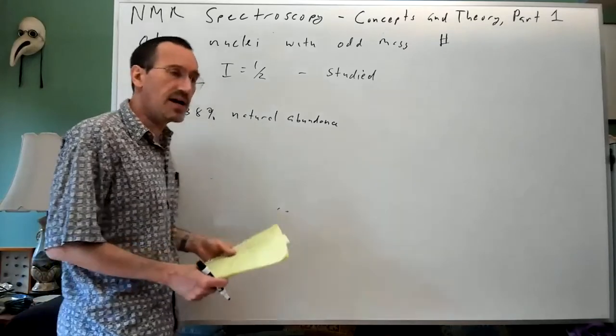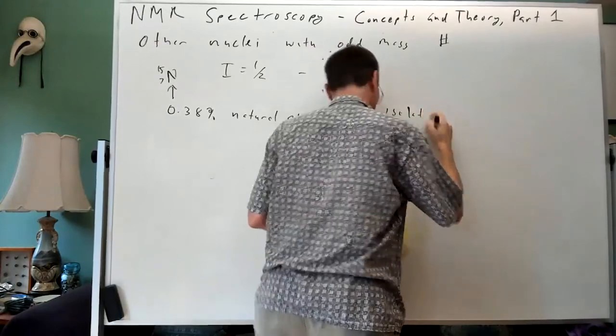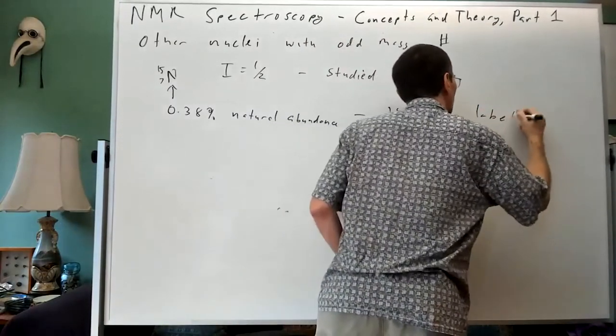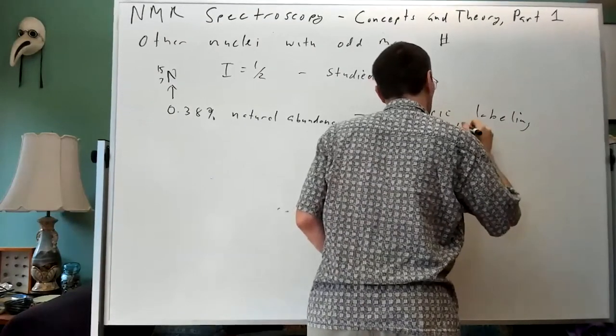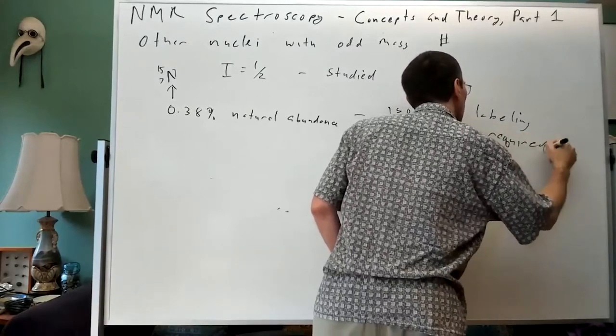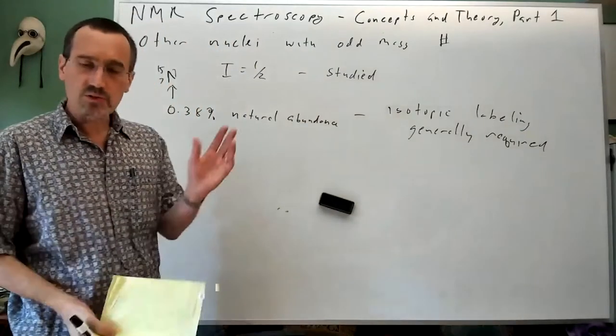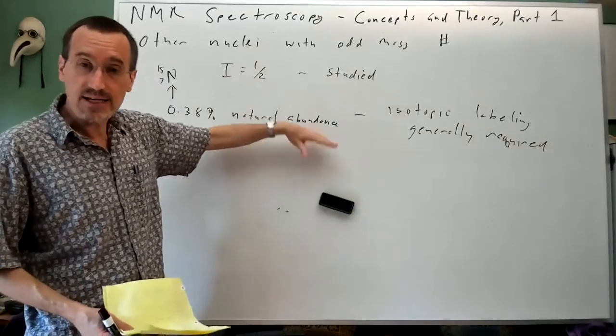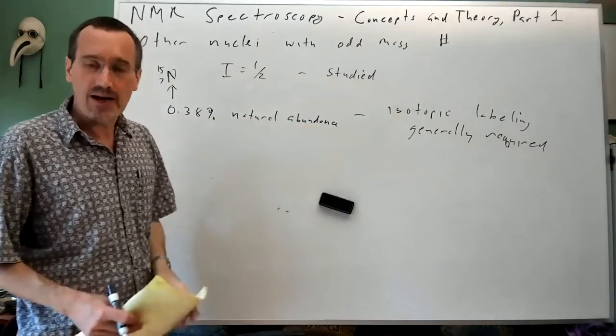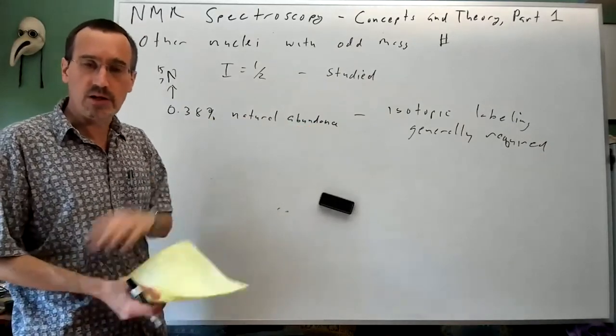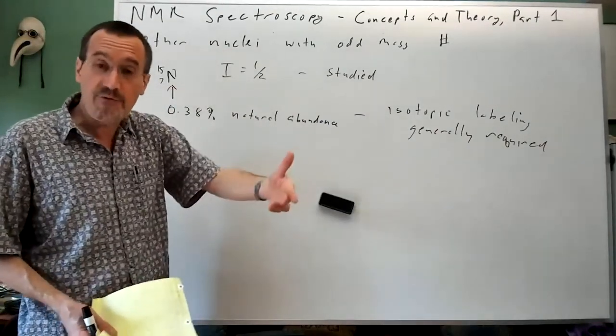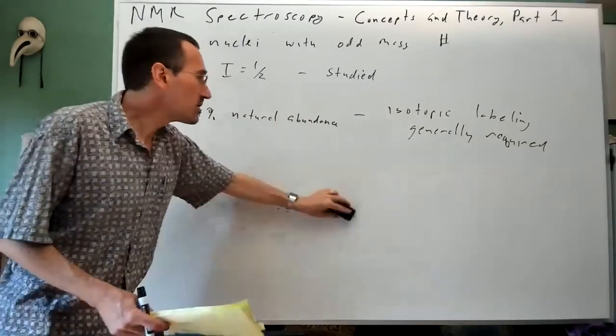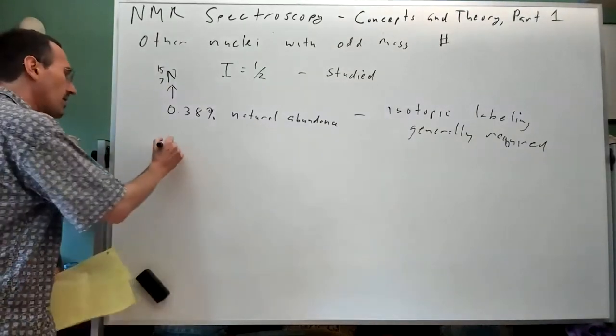Because the natural abundance is very low, nitrogen-15 NMR is very hard at natural abundance, but it's very useful in biomolecular NMR because you have amide bonds in proteins. It's easy to put in isotopic labels through protein expression.